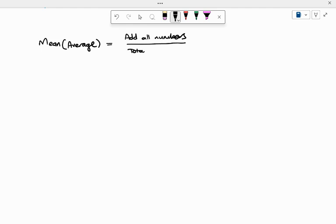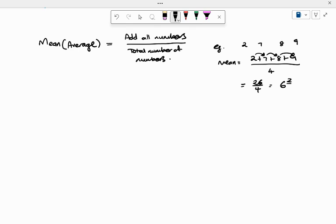A simple example: I've got 2, 7, 8, and 9. The mean is 2 plus 7 plus 8 plus 9 divided by the total number of numbers, which is 4. So 2 plus 7 is 9, plus 8 is 17, plus 9 is 26. So we get 26 divided by 4. And 26 divided by 4 is: 4 goes into 26 six times with a remainder of 2, which is 6 and a half, which is 6.5.